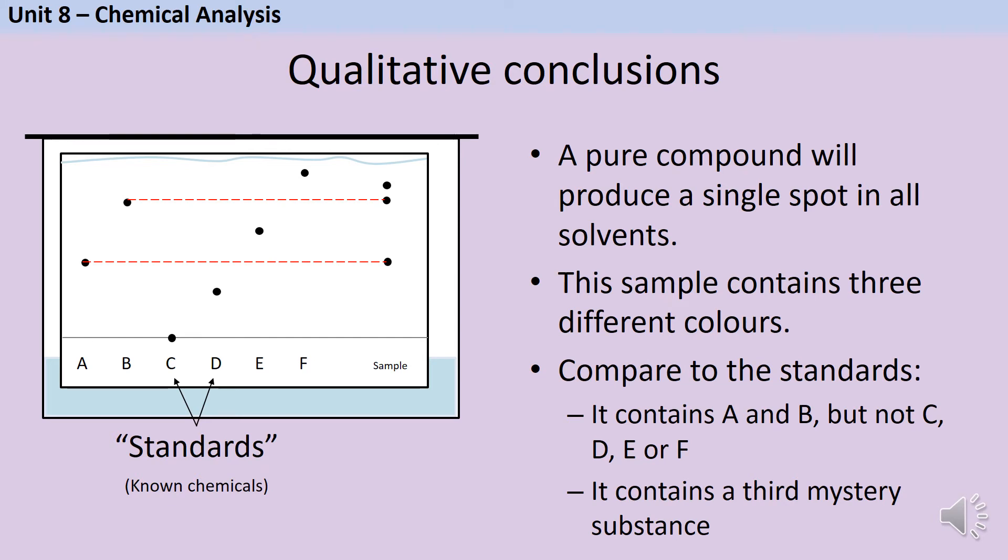Then I'm going to compare those three dots to the standards. So you can see that I have one dot at the same height as the dot for A, and that tells me that my sample probably contains substance A. And then I have another dot at the same height as substance B. So my sample contains substance B.